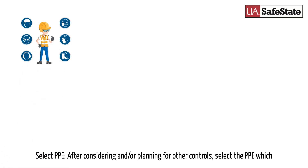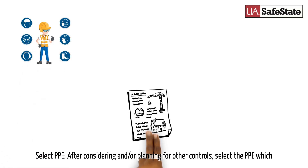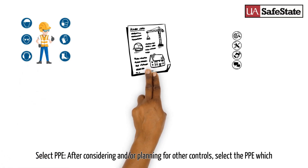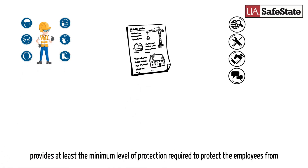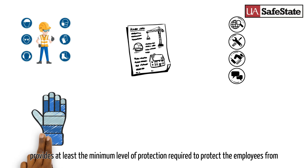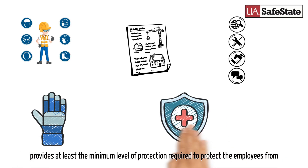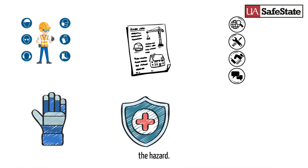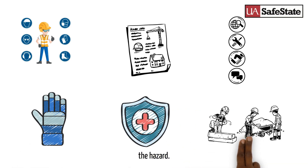Step six: Select PPE after considering and planning for other controls. Select the PPE which provides at least the minimum level of protection required to protect employees from the hazard.